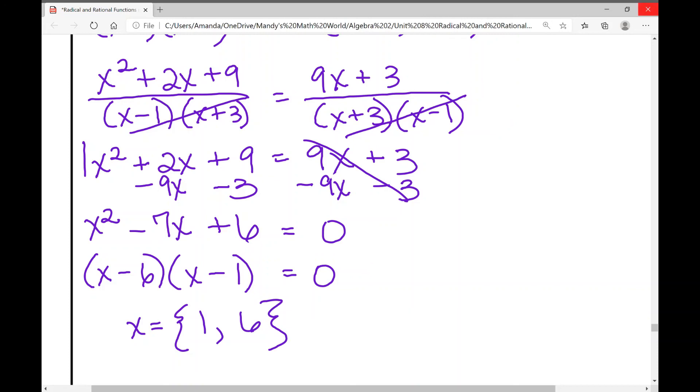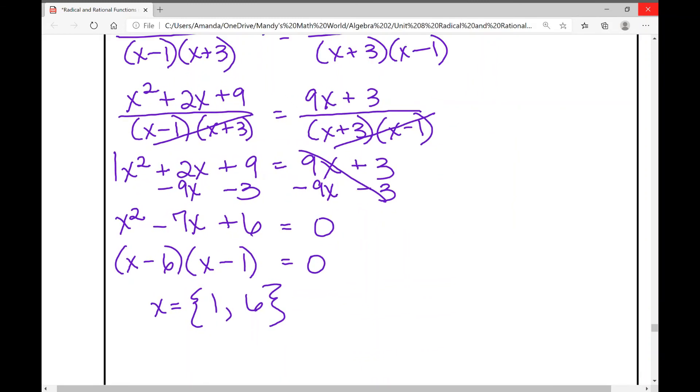But remember, we want to make sure that we do not have an extraneous solution. So I'm looking in these solutions to see if there's a number when I plug it in for x, that I would get 0 in the denominator. If I plug in 1 for x, I would get a 0 in the denominator. This right here is an extraneous solution. It would create a 0 in the denominator, which means our solution is x equals 6.